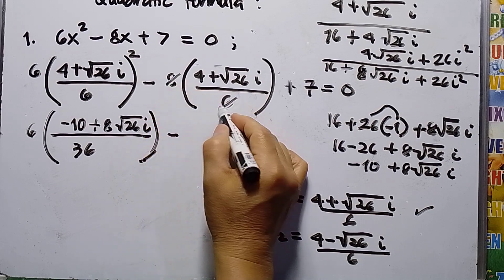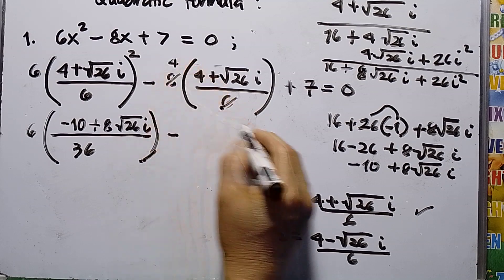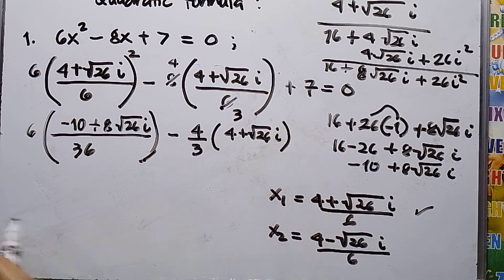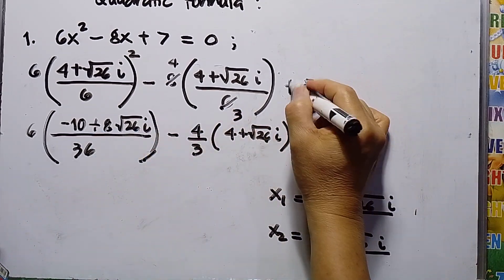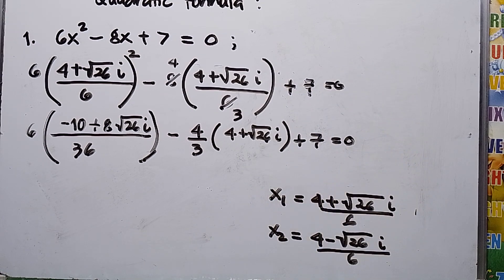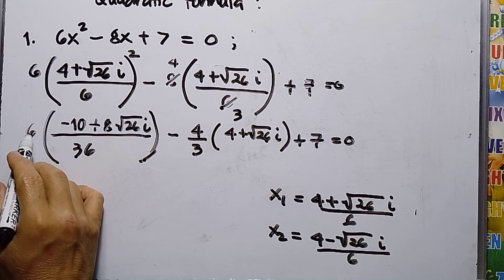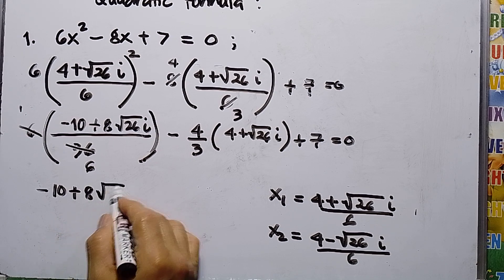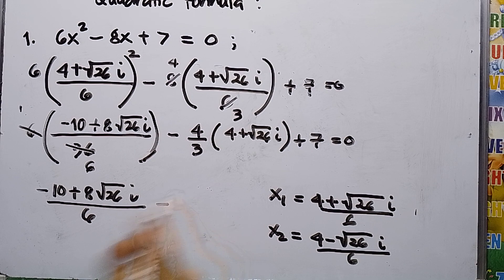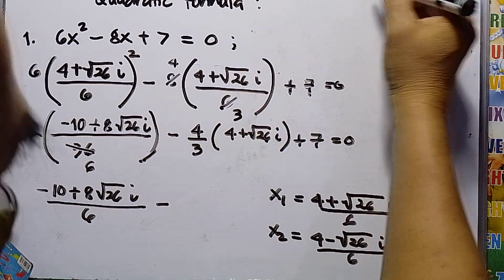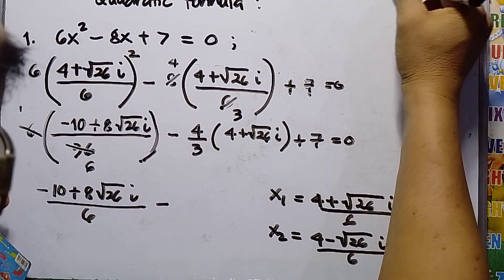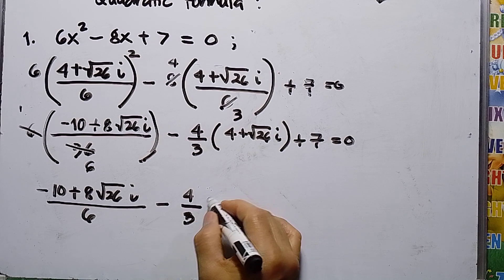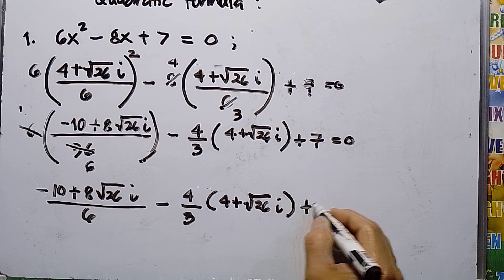Then minus 8 times 4 plus square root of 26 i over 6: the GCF of 8 and 6 is 2, so 8 divided by 2 is 4 and 6 divided by 2 is 3, giving minus 4 over 3 times the quantity 4 plus square root of 26 i. Plus 7 equals 0. The LCD of 6 and 3 is 6. So we have negative 10 plus 8 square root of 26 i, all over 6, minus 4 over 3 times 4 plus square root of 26 i, plus 7 equals 0.